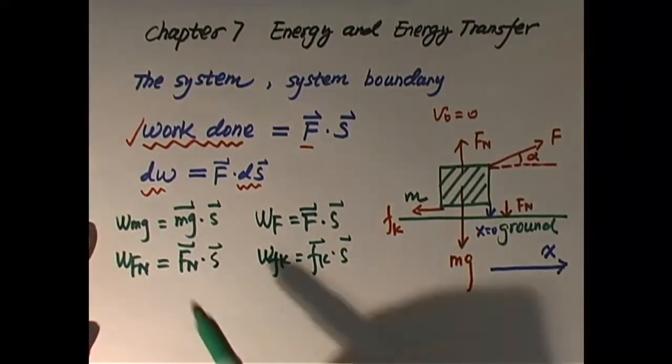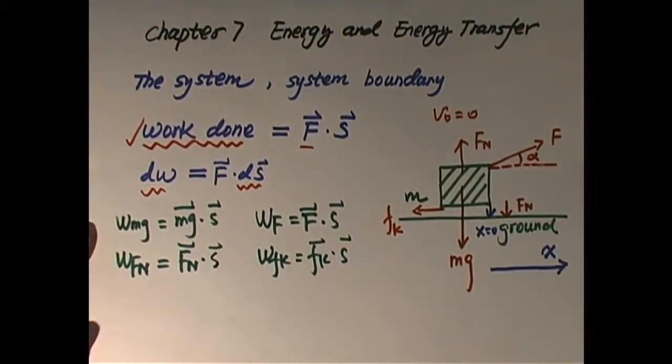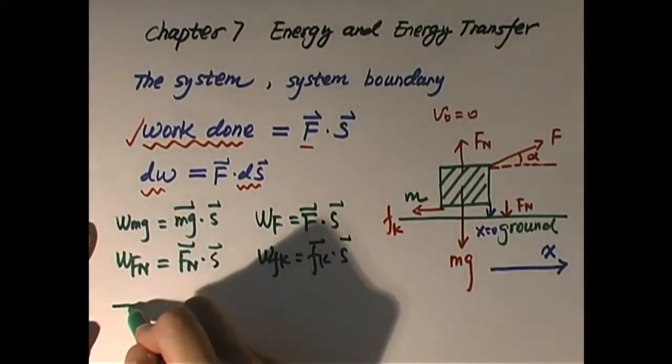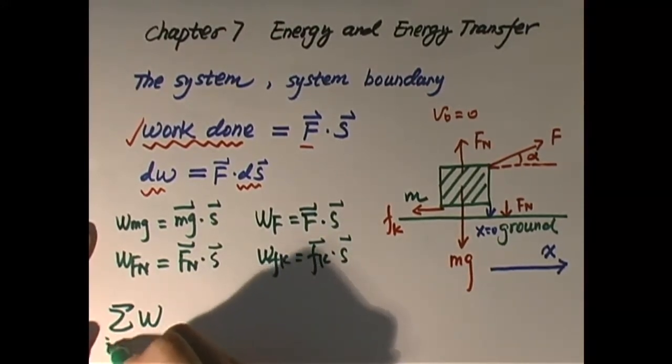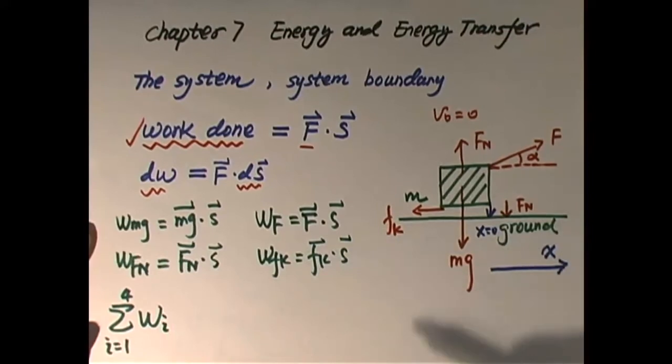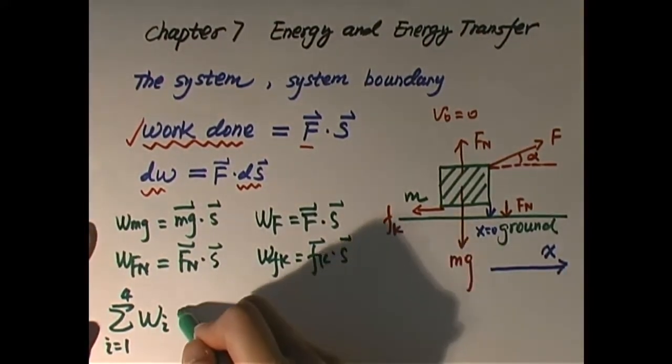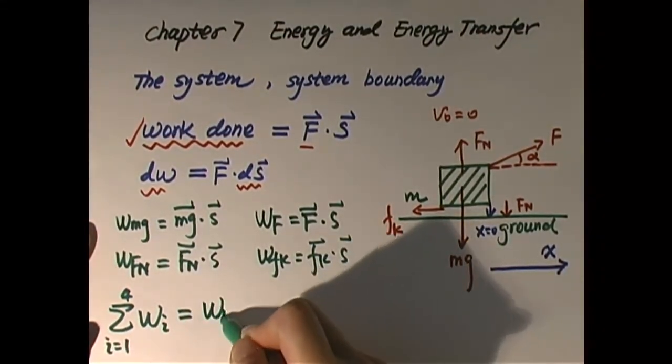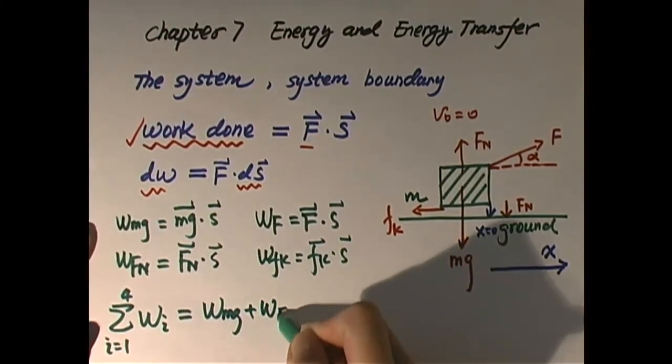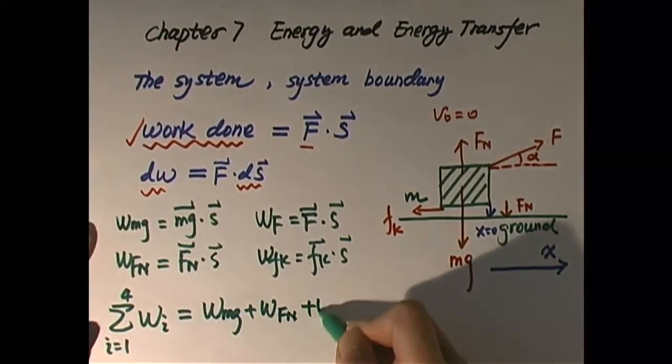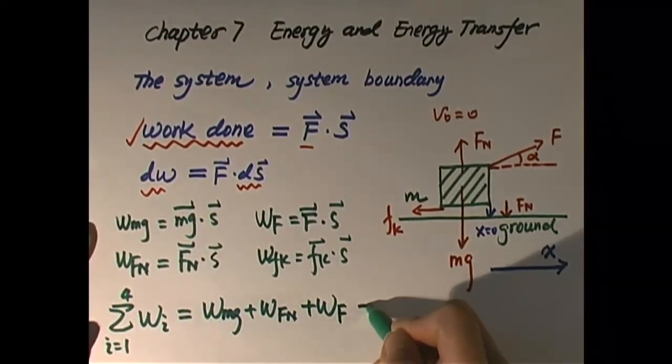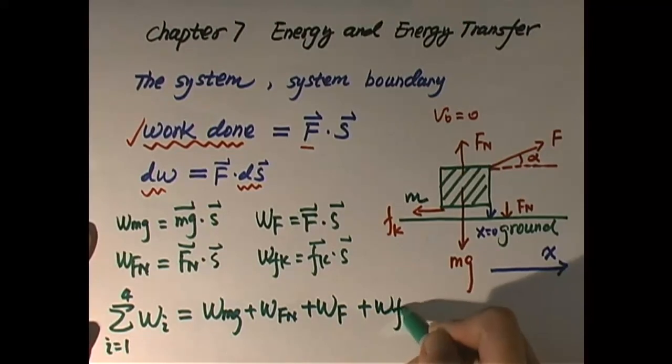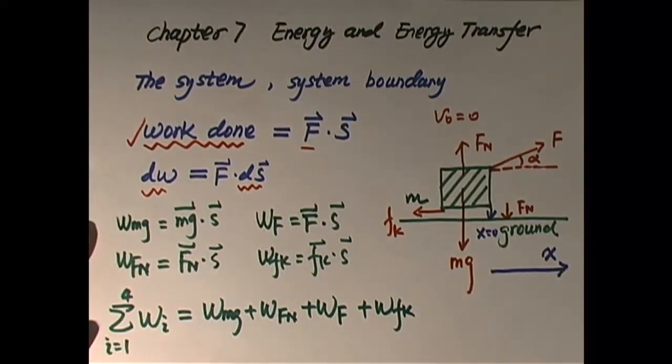So we have four forces and four terms of work done. We define total work done as Σ Wi from i=1. In our case we have four, so we add all Wi. That is work done by gravity plus work done by normal force plus work done by the dragging force plus work done by kinetic friction.